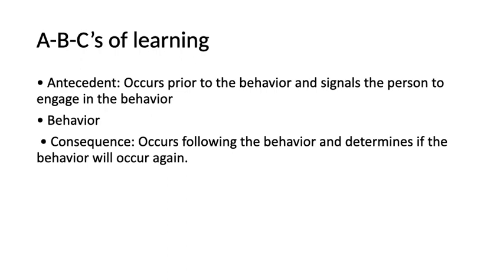The ABCs of learning as seen within the classroom setting are described as follows. A for antecedent is what occurs prior to the behavior and signals the person to engage in that behavior. B is the behavior — what is happening at that moment, whether that's a tantrum, hitting, or any other behavior. And C, consequence, is what happens following the behavior and determines if the behavior will occur again.